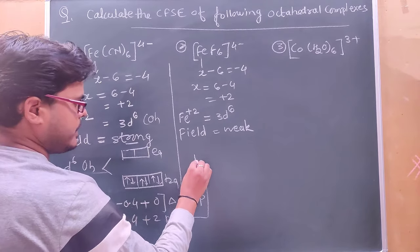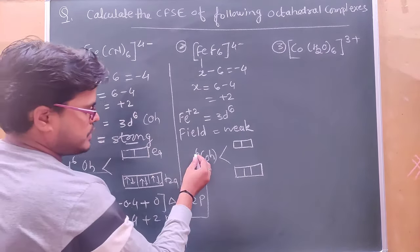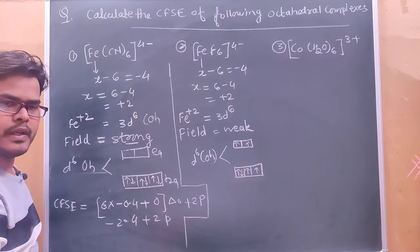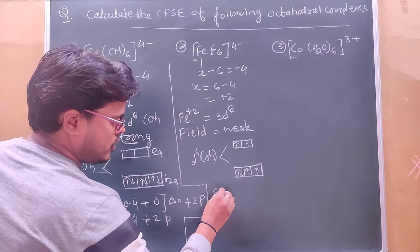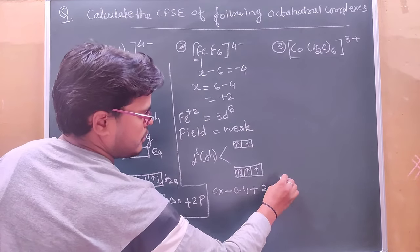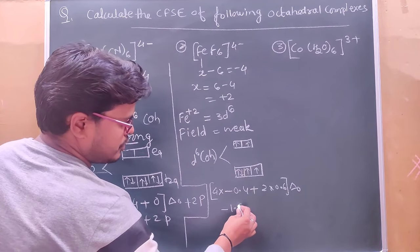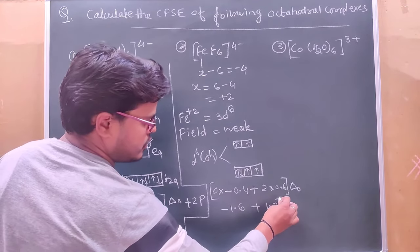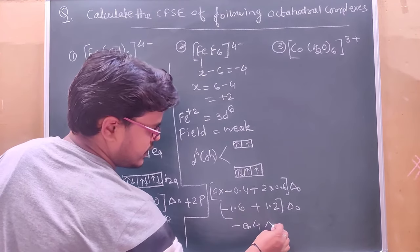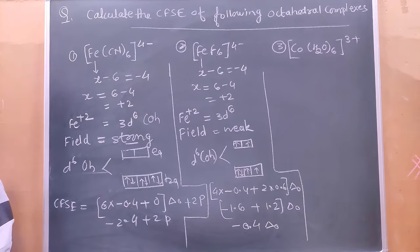Weak field, d6, octahedral — splitted levels में भरिए। Weak field में 1, 2, 3, 4, 5, 6 भरेंगे। यहाँ t2g में 4 electrons और eg में 2 electrons हैं। CFAC = 4 × (-0.4) + 2 × (0.6), bracket के बाहर ΔO। Weak field में pairing energy की ज़रूरत नहीं। -1.6 + 1.2 = -0.4ΔO। यह दूसरे example का answer है।